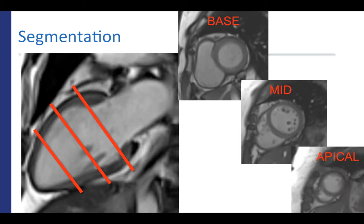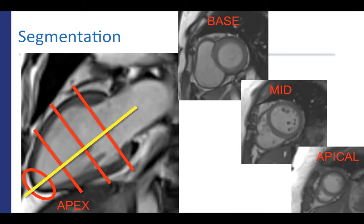Next, an apical short axis slice. The circumference of the left ventricle is typically smaller as you move from base to apex, and that's due to the normal tapering of the left ventricle at the apex. Finally, the true apex is also included in this model. You'll note that all three of the short axis representative images shown here were obtained perpendicular to the long axis of the left ventricle.